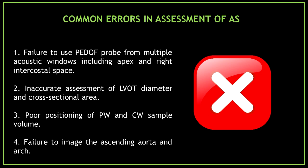Now let's talk about some of the common errors in assessment of aortic stenosis. First, failure to use the probe from multiple acoustic windows, including the apex and right intercostal space. Second, inaccurate assessment of the left ventricular outflow tract diameter and cross-sectional area. Third, poor positioning of pulse wave and continuous wave sample volume. And fourth, failure to image the ascending aorta and arch.